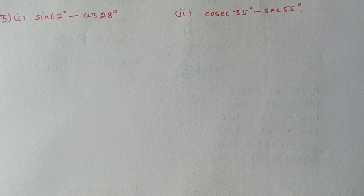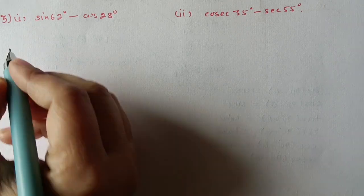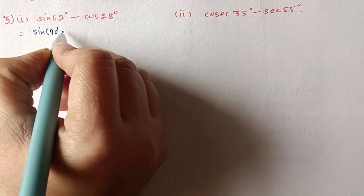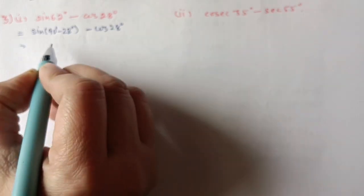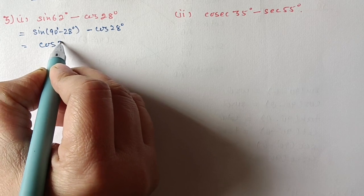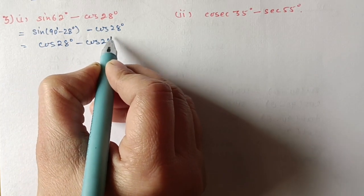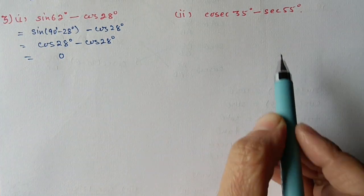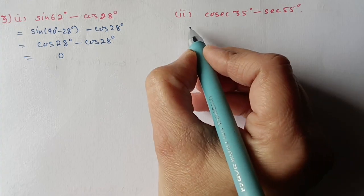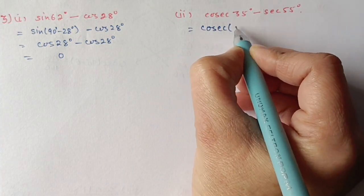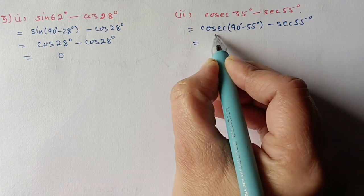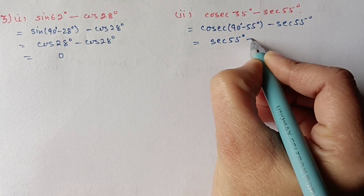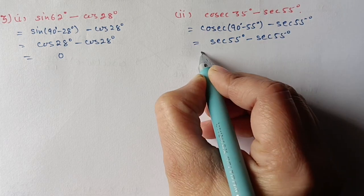Question 3, first part: evaluate sin 62° − cos 28°. Write sin 62° = sin(90° − 28°) = cos 28°. So cos 28° − cos 28° = 0. Second part: cos 35° − sec 55°. Write cos 35° = cos(90° − 55°) = sec 55°. So sec 55° − sec 55° = 0.